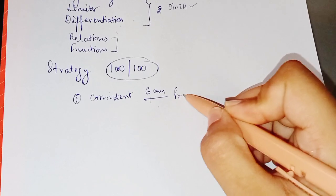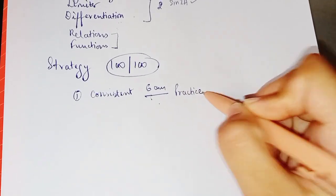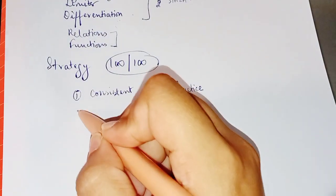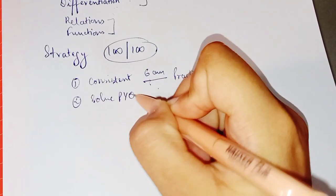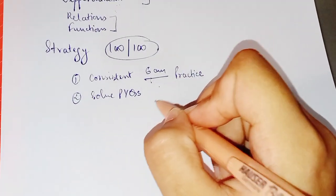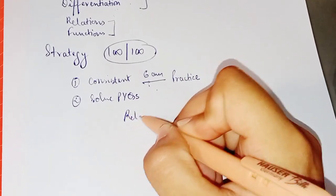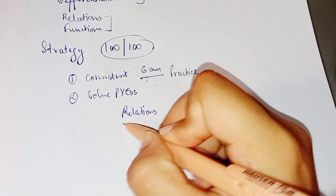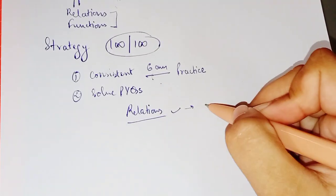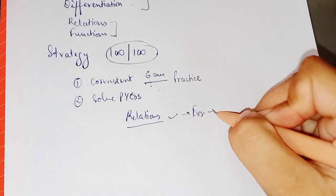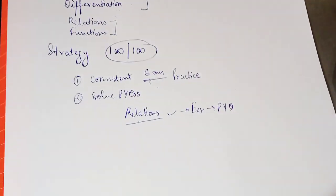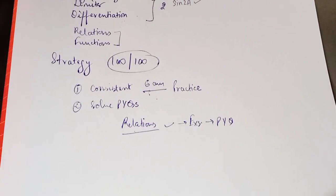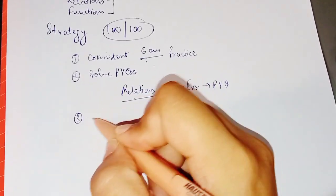Second is you'll have to solve PYQs after you end your syllabus. And not only this, suppose you've ended up with this chapter relations, then you can do the back exercises. The examples are very important. Then move on to the previous year questions of this particular chapter, and that is how you can solve those questions, you can practice. Then third is these small tests that are conducted in school, your prelim examination and all of this. Please take it seriously.